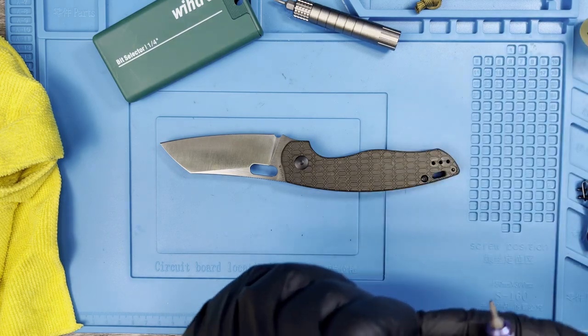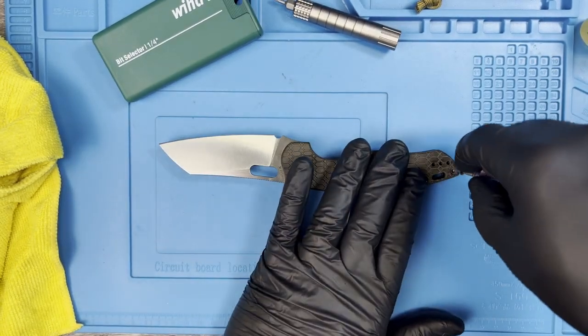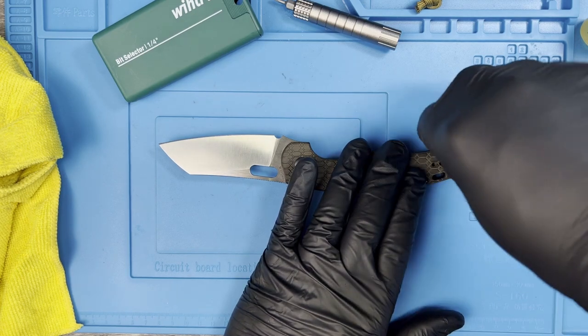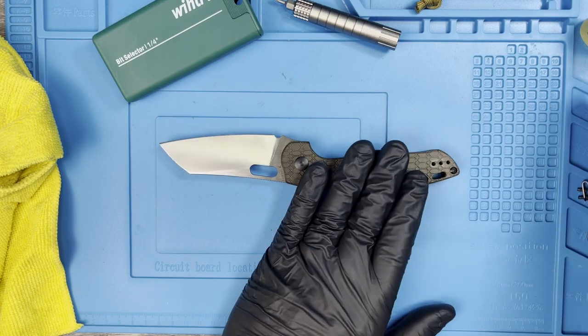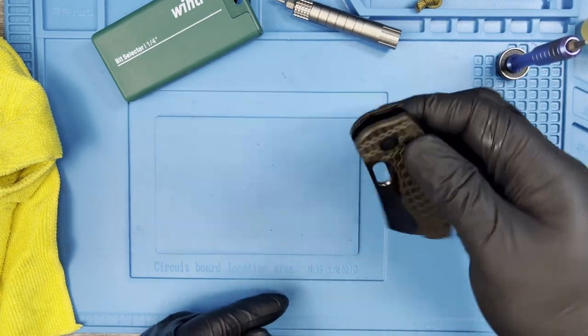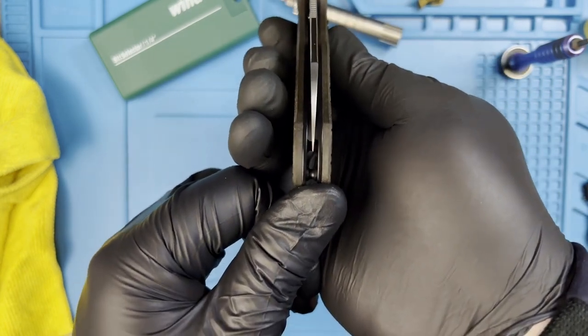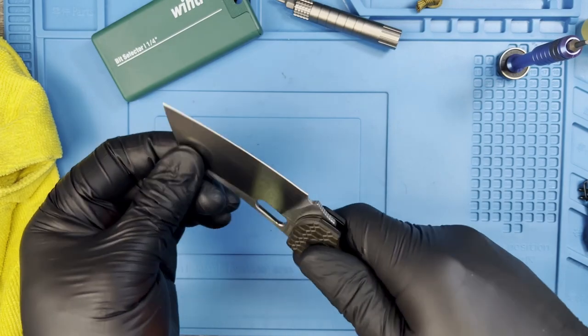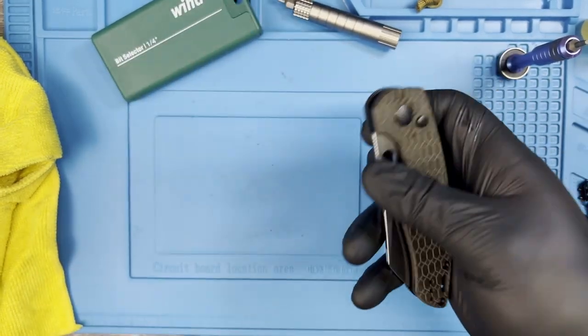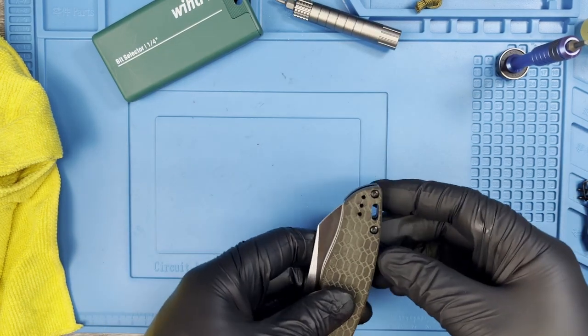So you should be good now to reinstall the other body screw. And then I would do a quick check of the play and centering before you reassemble everything because you might have to loosen some stuff up. So let's just check centering, dead center. No play. Oh, that feels so much smoother. So much smoother.